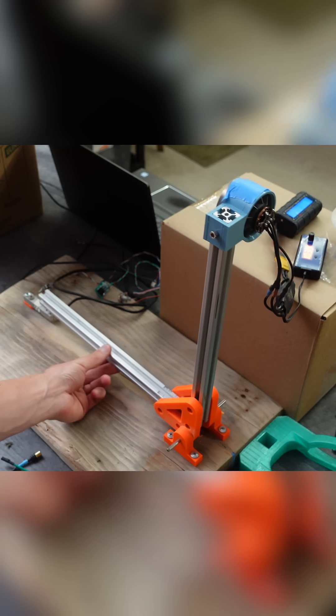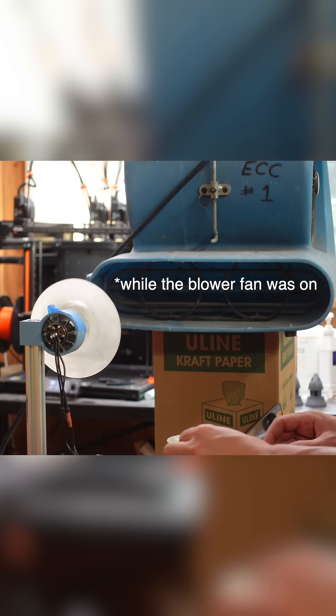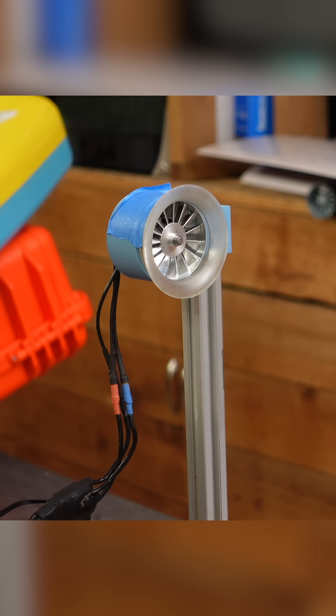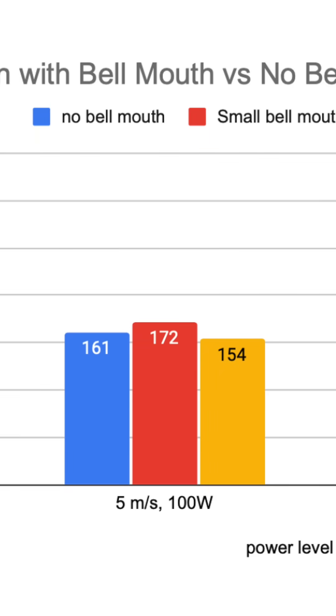But that was with the thrust test stand zeroed while the fan was on. It turns out the large bellmouth creates 24 grams of drag and the small one creates 3 grams of drag. If we factor that in, the results look more like this.